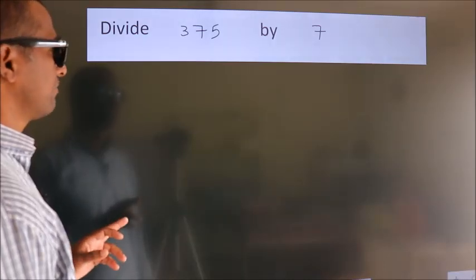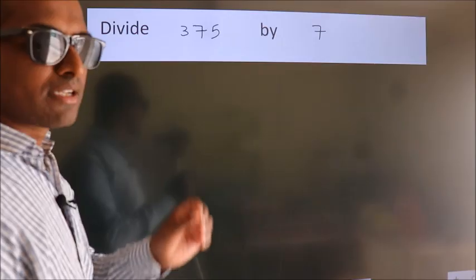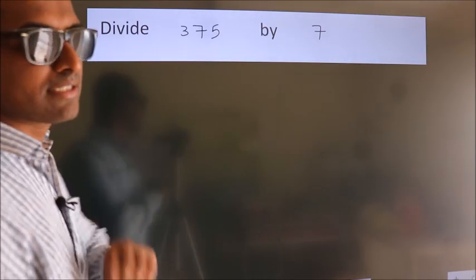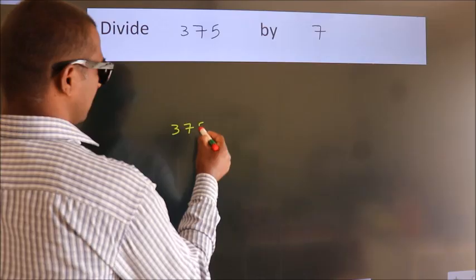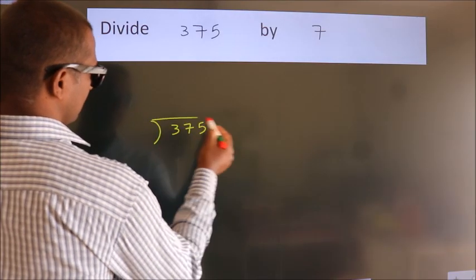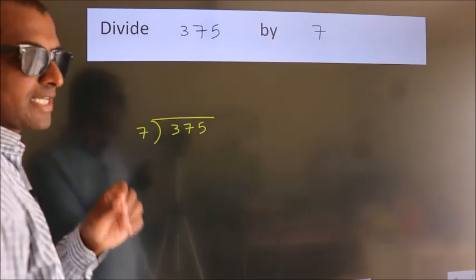Divide 375 by 7. To do this division, we should frame it in this way: 375 here, 7 here. This is your step 1.